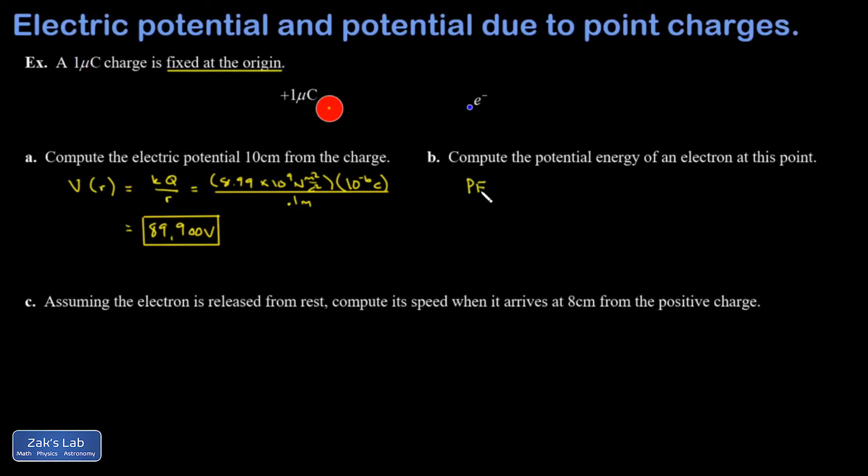Instead, I can plug into the formula potential energy is given by Q times V. And if I plug in the charge on the electron, 1.6 times 10 to the negative 19 coulombs, and plug in the voltage at this point, remember a volt is equivalent to a joule per coulomb. So that might be a nice way of tracking the units here. I can see the coulombs cancel and I get joules out of it.